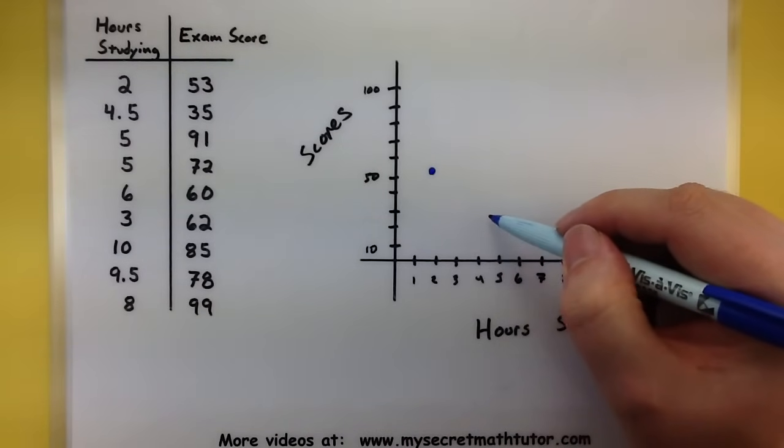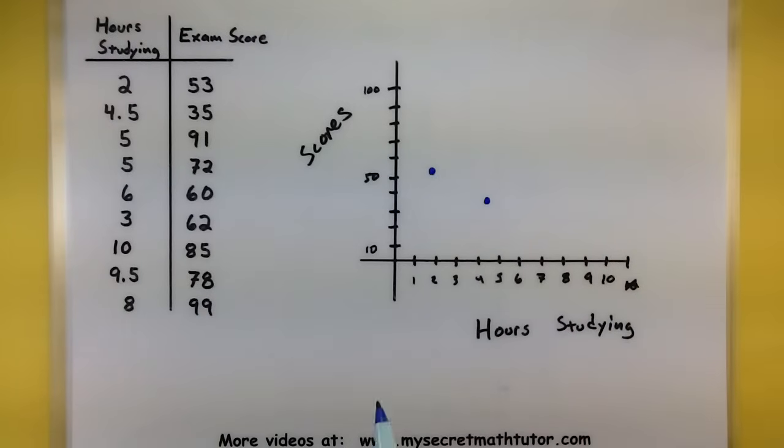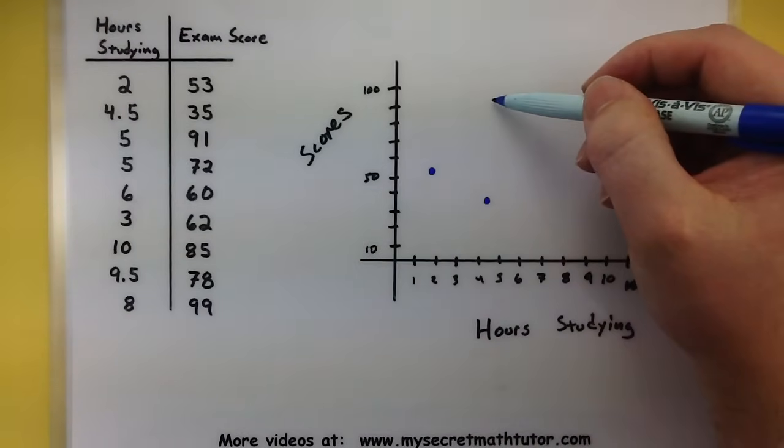So up to 10, 20, 30, and a half. Not bad. Okay. Up to 5. 5 needs to go all the way up to 91. So way up here.